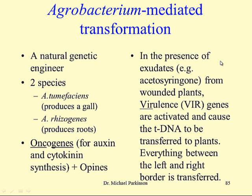In the presence of exudates — mainly phenolics like acetosyringone from wounded plants — the virulence genes are activated, causing the T-DNA to be excised and everything between the left and right borders to be transferred. If you want to transform a monocot, monocots don't produce acetosyringone in large quantities, so the virulence genes won't be activated. However, you can activate them by exogenously adding acetosyringone to the transformation medium.